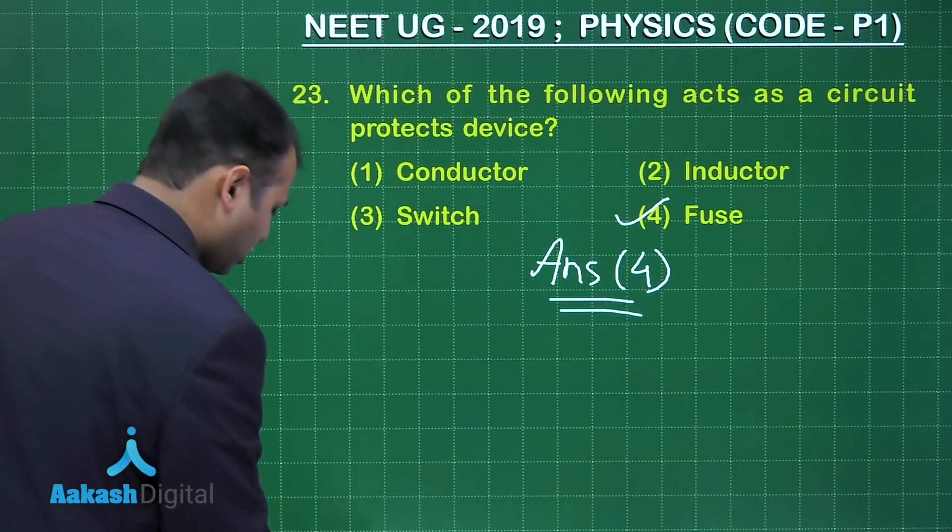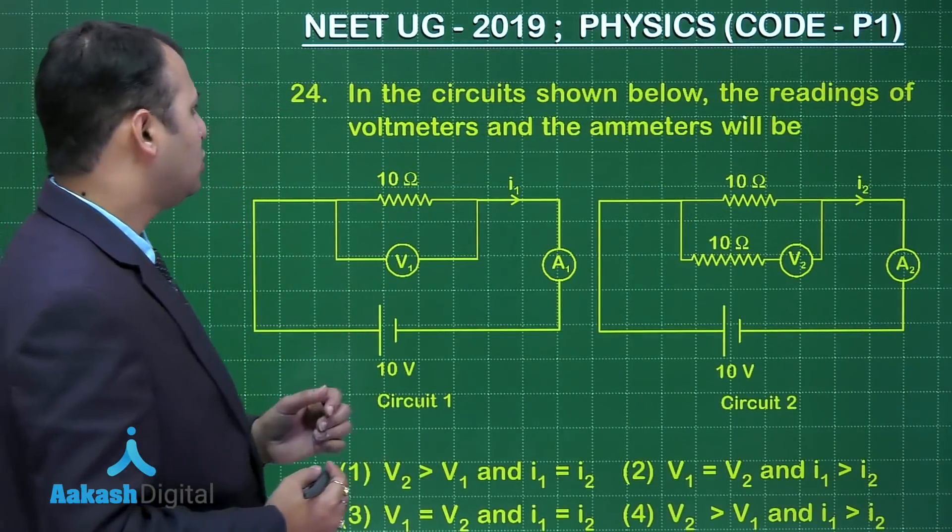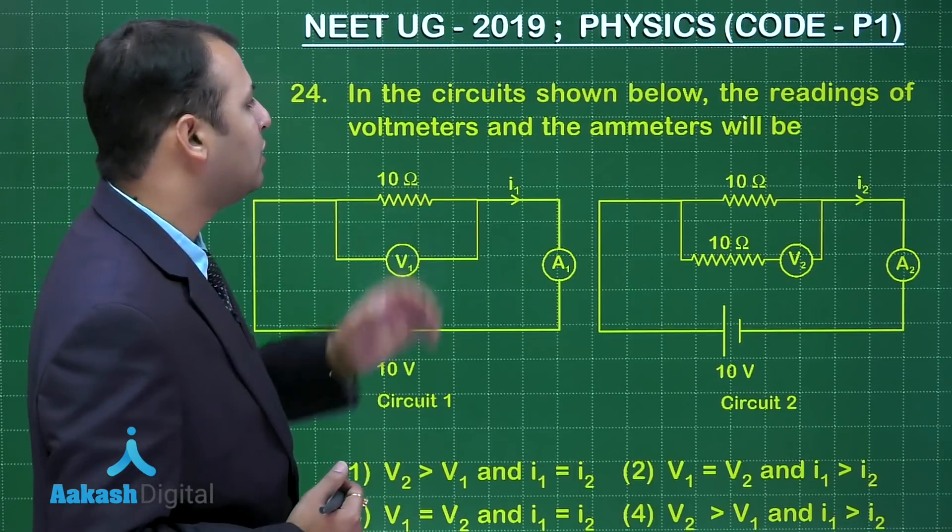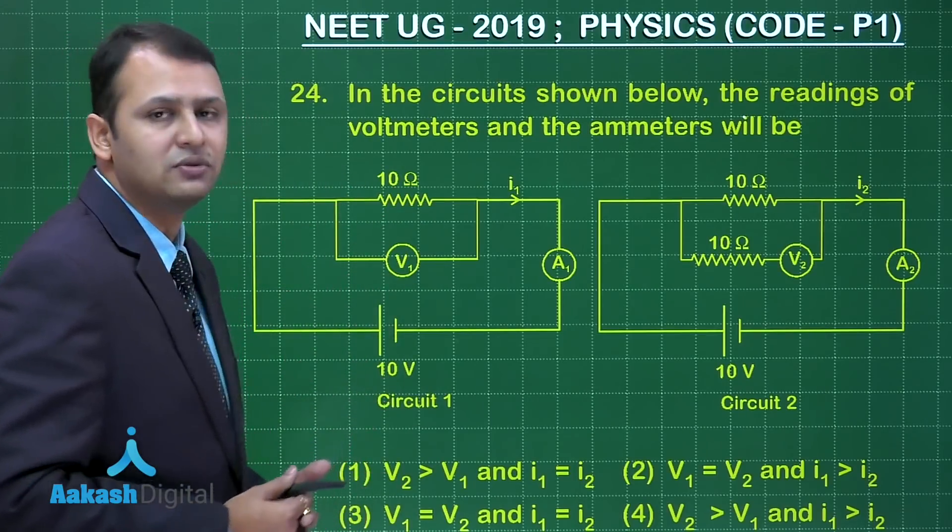Now let's move on to the next question, question number 24. The question belongs to chapter current electricity. Here in the circuits shown below, the readings of voltmeters and ammeters will be: